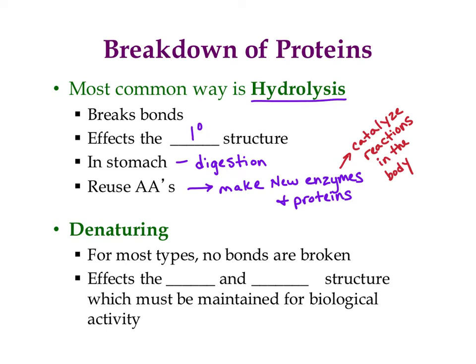Outside of your body, the most common way to break down proteins is denaturing. When you denature a protein, it actually only affects the tertiary and quaternary structures. This is a problem because they need those structures to maintain biological activity — meaning to work in the body. Without that, they basically just flop around and they're not good anymore; they can't be put back together. For most types of tertiary interactions, no bonds are actually broken — these are all intermolecular forces.